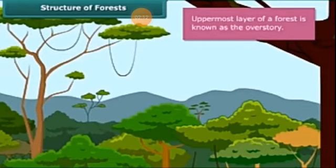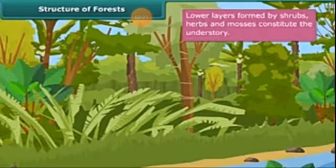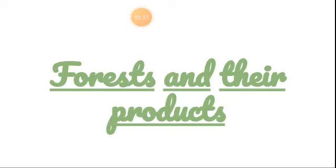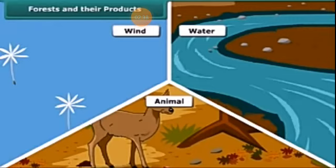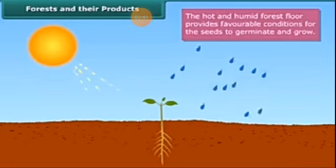A forest has trees of different types. The uppermost layer of the forest is known as the overstory. The lower layers formed by shrubs, herbs, and mosses constitute the understory. Seeds produced by trees are dispersed by wind, water, and animals. The hot and humid forest floor provides favorable conditions for the seeds to germinate and grow. Seedlings emerge from germinating seeds and grow into saplings first and then trees.